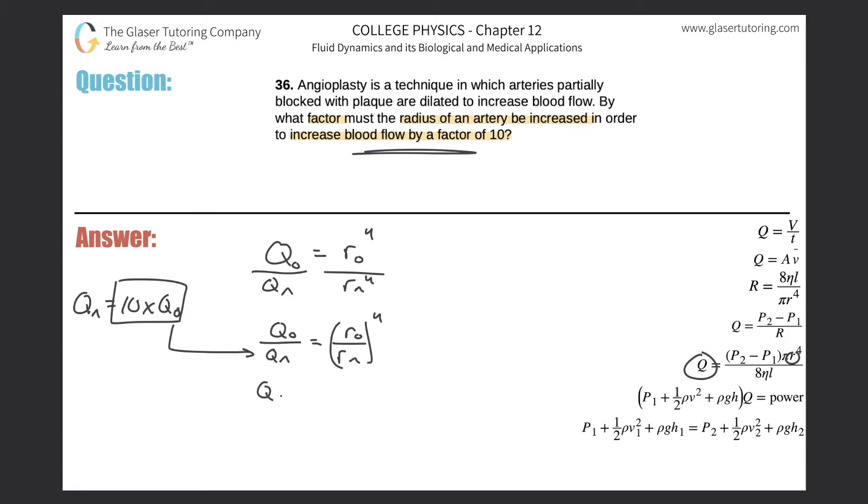That would mean q sub o over 10 times q sub o would equal ro over rn, all raised to the fourth. The qos cancel, and what we are left with is 1 over 10 equals ro over rn, all raised to the fourth power.